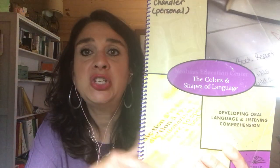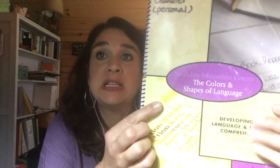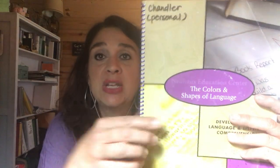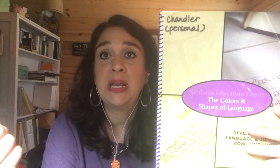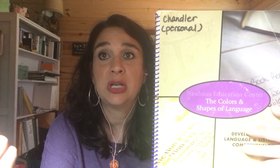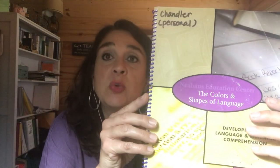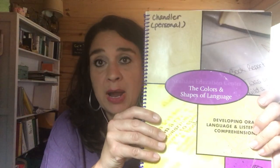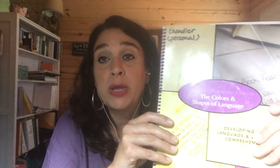This is our Colors and Shapes of Language manual — our first volume. We deepen children's understanding of oral language and listening comprehension, and this impacts their reading comprehension. You'll learn how to build these language skills and how to teach children to summarize using what we call the five W's.